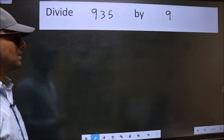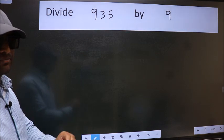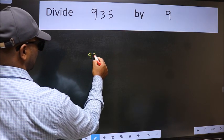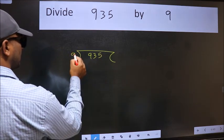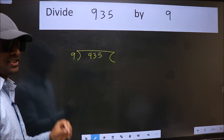Divide 9.35 by 9. To do this division, we should frame it in this way. 9.35 here and 9 here. This is your step 1.